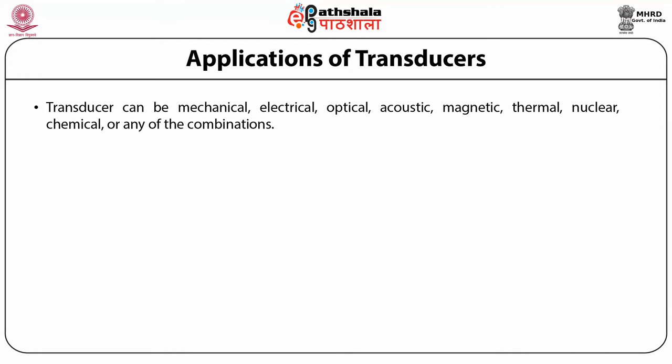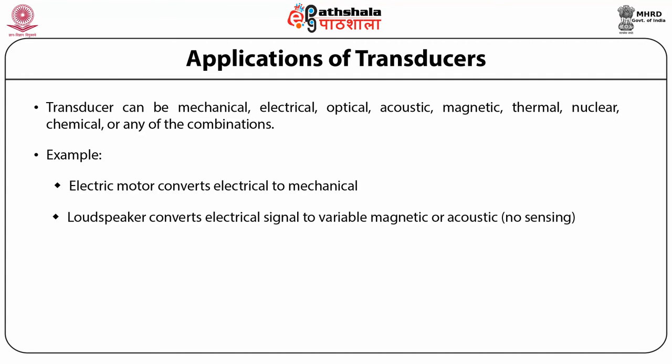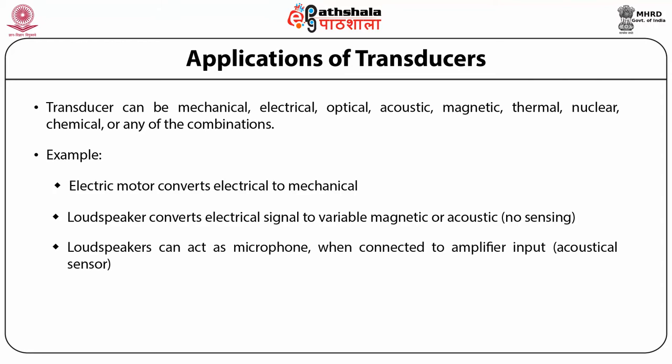Examples of transducers: an electric motor converts electrical energy to mechanical. A loudspeaker converts an electrical signal to variable magnetic or acoustic energy. Loudspeakers can also act as a microphone when connected to an amplifier input — that is, as acoustical sensors.